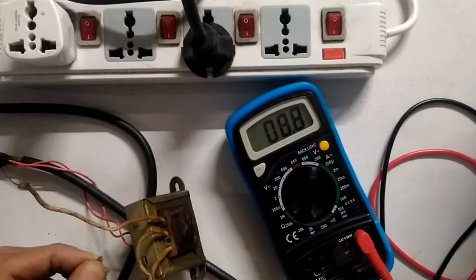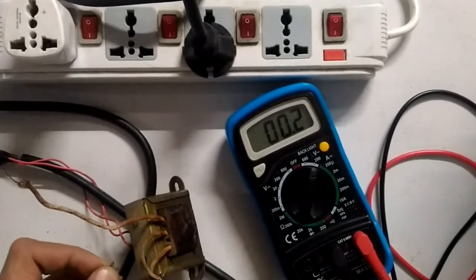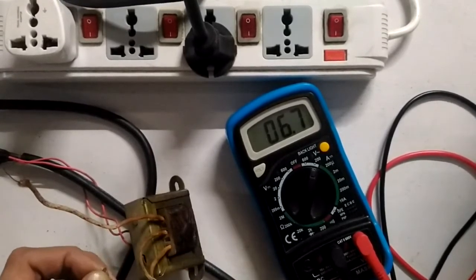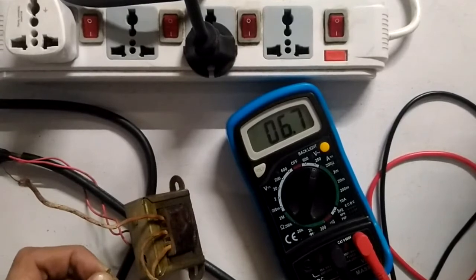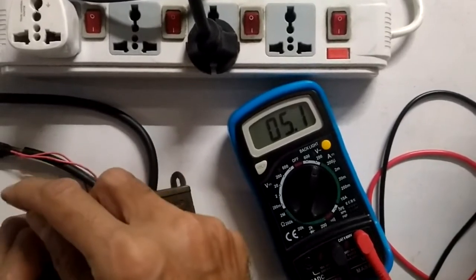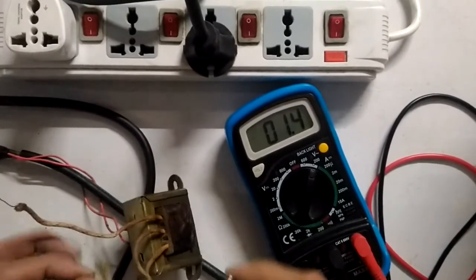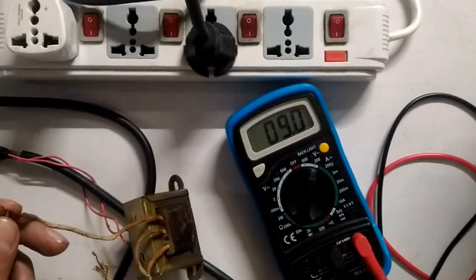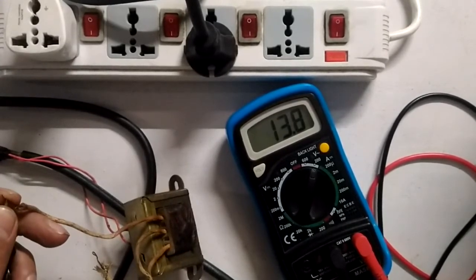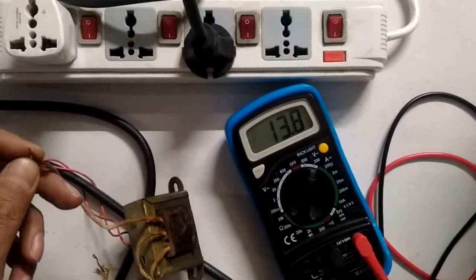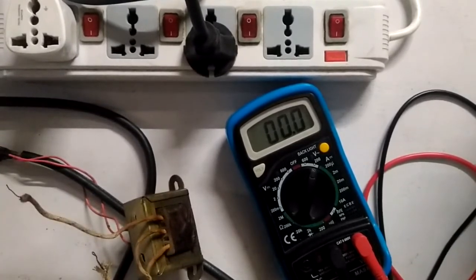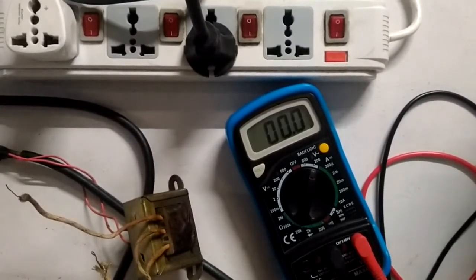I'll connect it to the center tap and see what we are getting. Now here I'm getting around 6.7 volts on one side and 6.7 on another side and 13.8 or 13.9. Okay, so fairly good measurement for your AC voltages. Next we are going to try out the DC measurements on this.